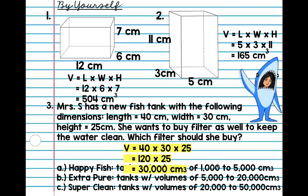So, which option is best for Mrs. S? I know it's not A, because 5,000 is the most. 20,000 is the most for B. So, obviously, super clean is my best bet.